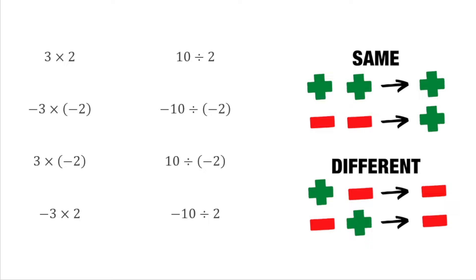These questions here just show how all those different variations could occur. For this first example I have 3 times 2, so I've got a positive multiplied by a positive — that's going to give me a positive. So we just do the numbers: 3 times 2 is 6. For the next one we've got negative 3 multiplied by negative 2. A negative times a negative is a positive, so that's going to give us a positive number. 3 times 2 is 6, so this would actually be positive 6.